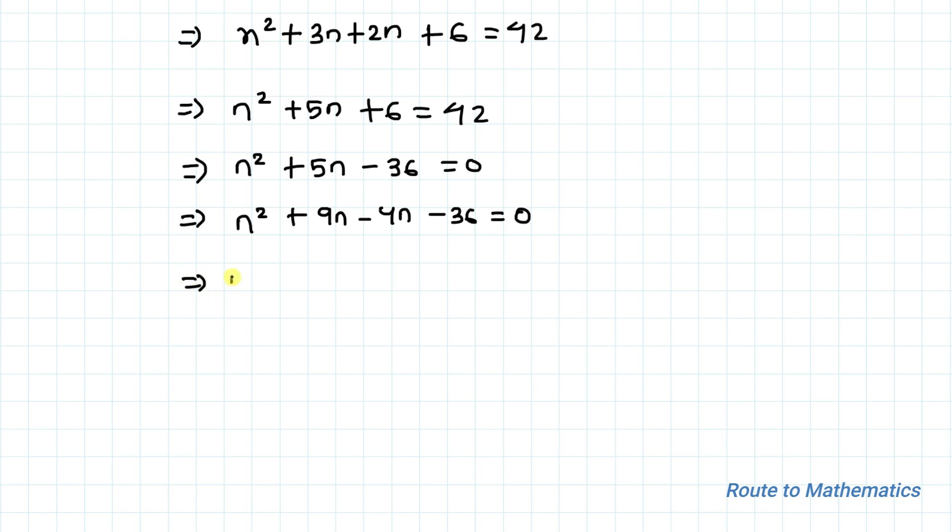This implies: taking n common from the first two terms, we have n(n+9). Now taking -4 common from the last two terms, we have -4(n+9) equals 0.